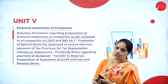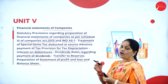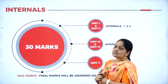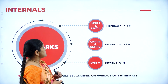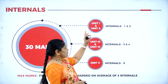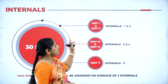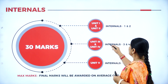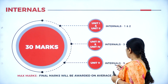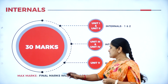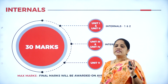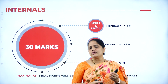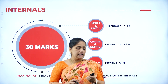Then let us go into the internals. In this internal assessment, we will be having three internal assessments. The portions for the first internal will be Unit 1 and Unit 2, Unit 3 and Unit 4 for the second internal, and Unit 5 for the third internal. Final marks will be awarded on the average of three internals — whatever the average is, we will take it and finally award the internal marks.